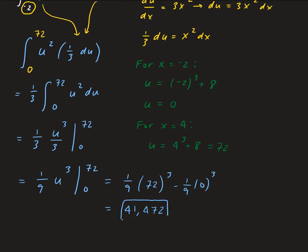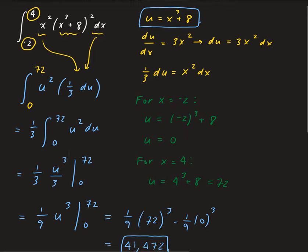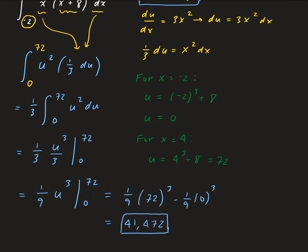This is the solution for our definite integral. We used u-substitution to convert our function in terms of u, and then using the u substitution we converted the x values into equivalent values in terms of u. You do that by replacing x with the limits of integration and finding the equivalent u value. Then we do our integral using the power rule for integration and obtain our result.